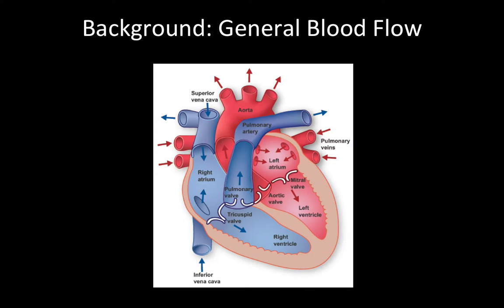First, some general background — we're going to talk about blood flow through the heart. Blood enters the heart through the superior and inferior vena cava into the right atrium. When diastole occurs, the right atrium contracts, pushing blood through the tricuspid valve into the right ventricle.